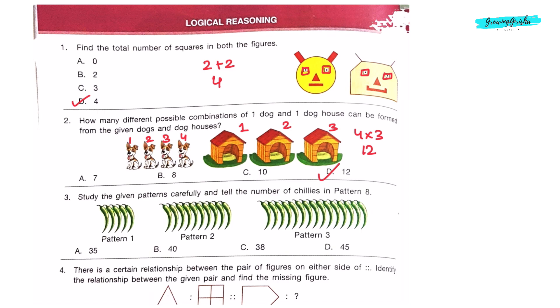Question 3: Study the given patterns carefully and tell the number of chillies in pattern 8. In pattern 1 there are 5 chillies. In pattern 2 there are 10 chillies. In pattern 3 there are 15 chillies. Now we can see that in every pattern 5 chillies are increasing. So in pattern 8 there will be 5 times 8 chillies. That is 5 times 8 equals 40. So there will be 40 chillies in pattern 8. Option B is the correct answer.